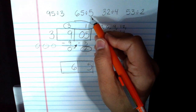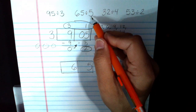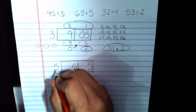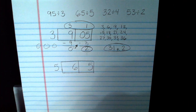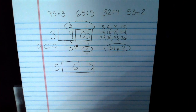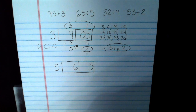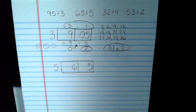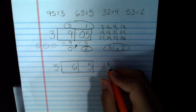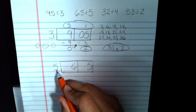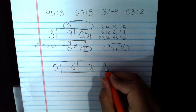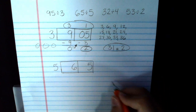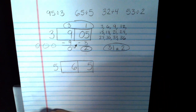And this time I'm not making three groups, I'm making five groups. 65 divided by 5. Since I'm making five groups, I'm going to write my five times tables here on the side.